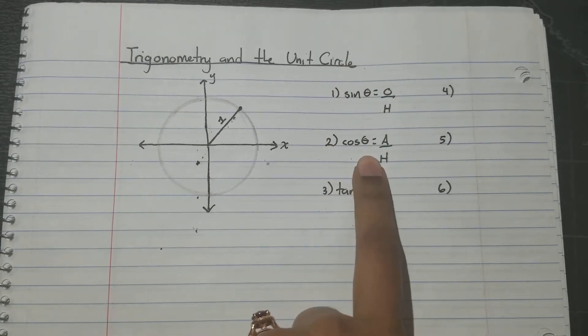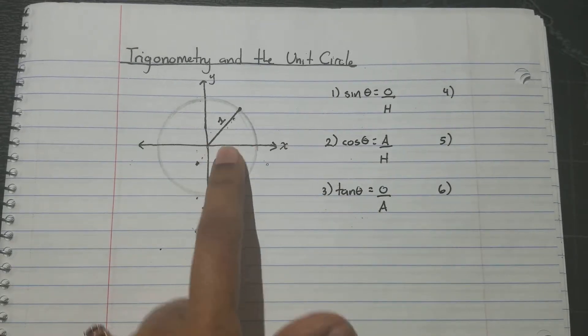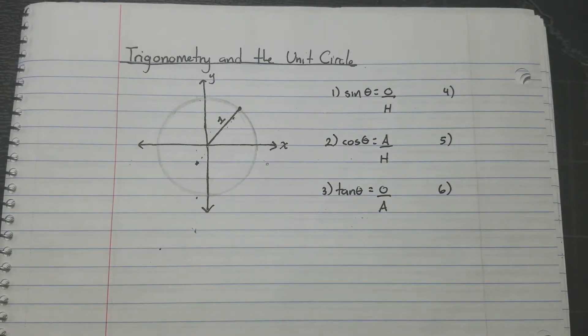Now we know that these all relate to the right triangle, yet we don't have a right triangle here. So we're going to end up drawing one in later.